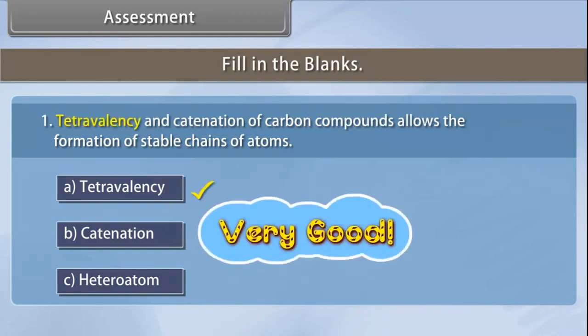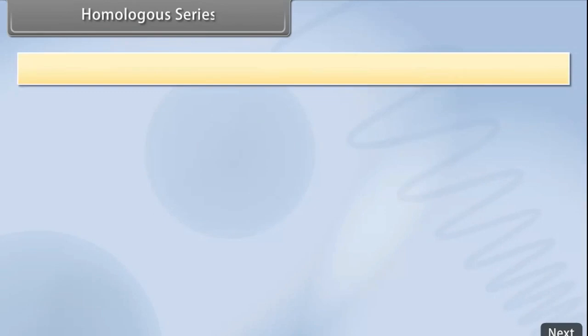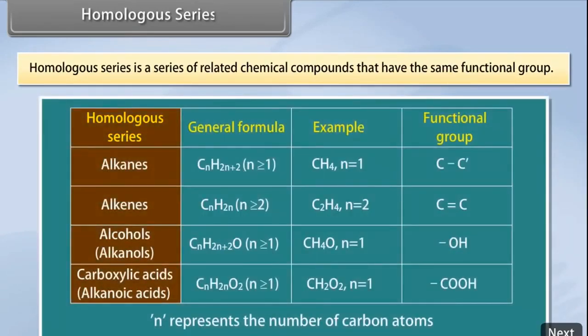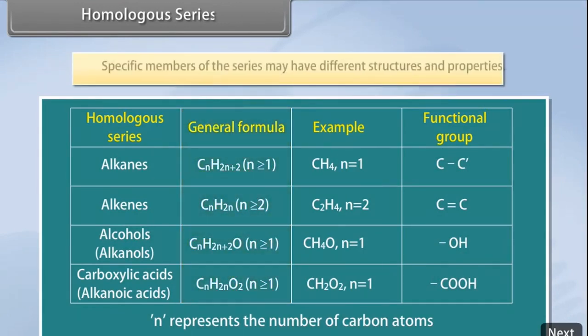Homologous series. A homologous series is a series of related chemical compounds that have the same functional group. These differ in formula by a fixed group of atoms. The successive members of such series are called homologs. Even though the general formula remains constant in a homologous series, specific members of the series may have different structures and properties. However, the reactivity usually remains the same.